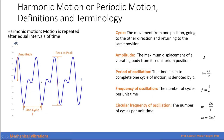We also have the circular frequency of oscillation, denoted by omega, which equals 2 pi times the frequency of oscillation, or 2 pi divided by the period.